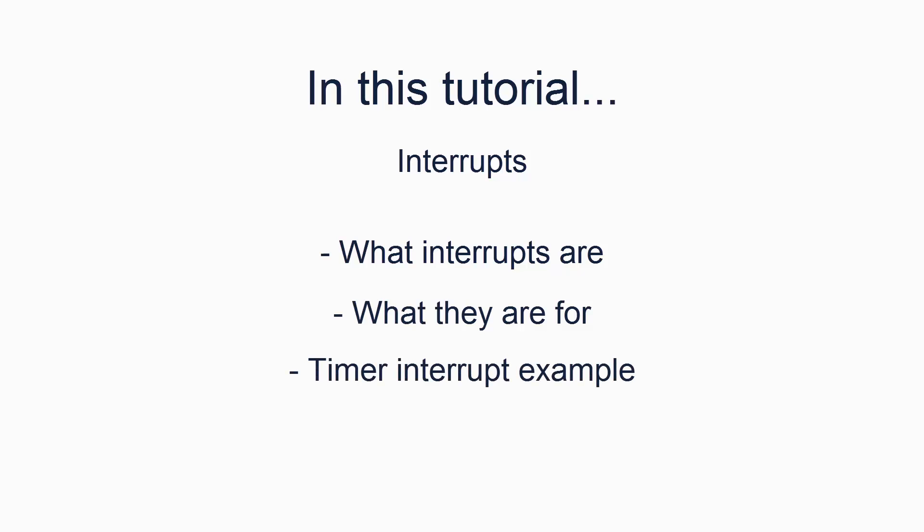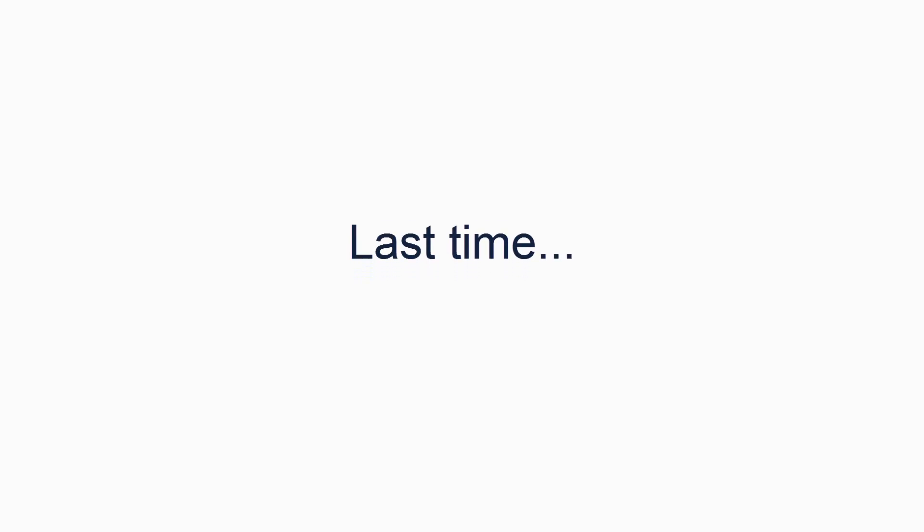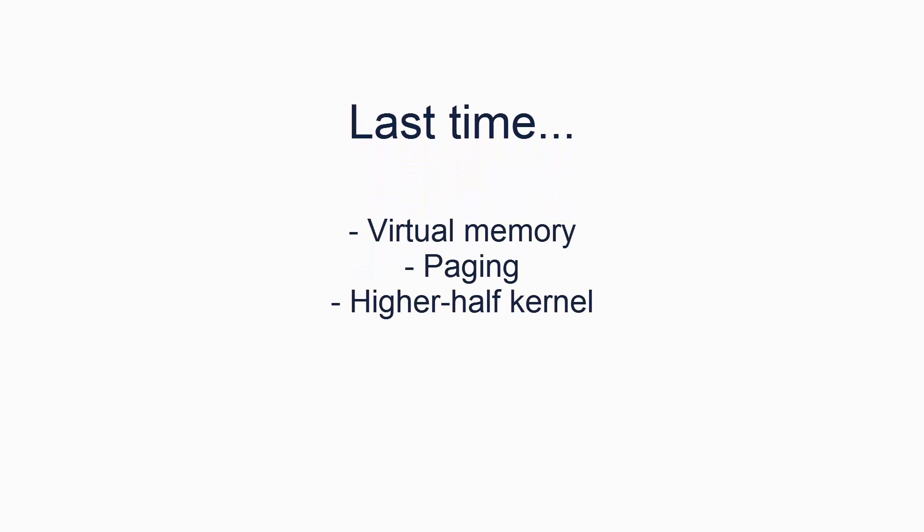We will also look at the way interrupts are handled on the x86 architecture. In the previous tutorial, we looked at virtual memory and how to set up paging and create a higher half kernel. I will be assuming from now on that the kernel is a higher half kernel, though you can choose not to use that design if you so wish. The code should be relatively simple to adapt.